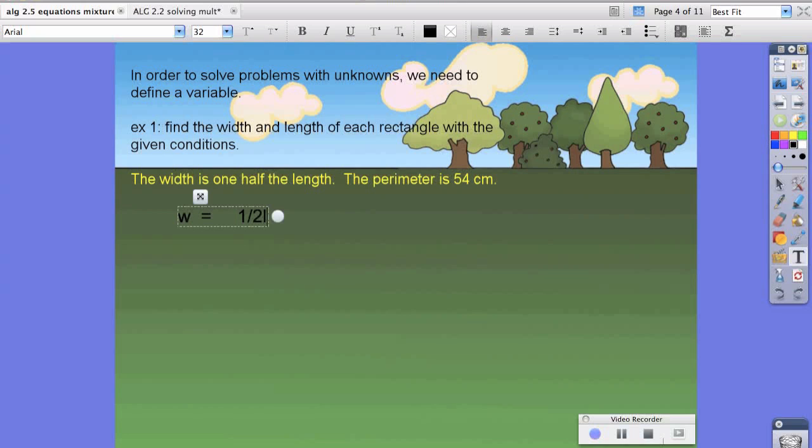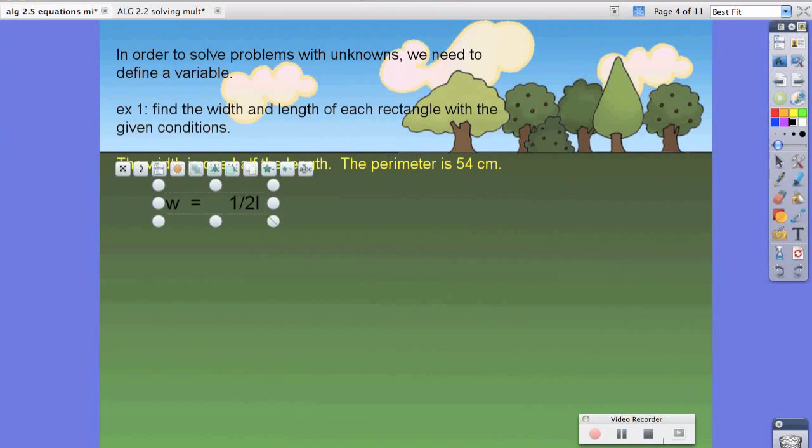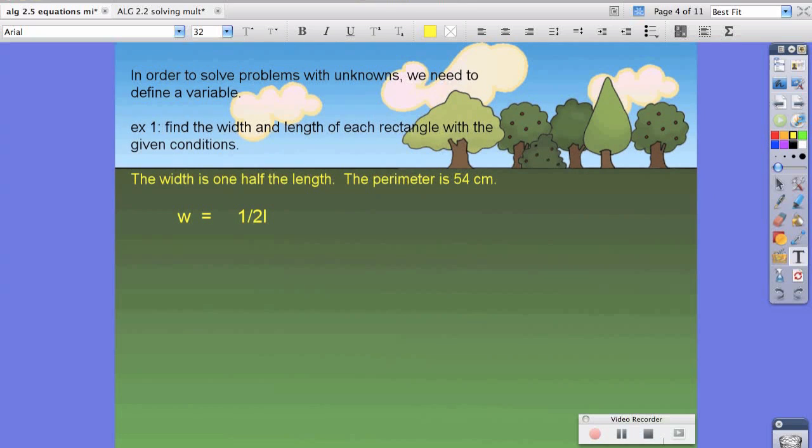The second equation, which you'll see is separated by an equal sign or a period, will give us the rest of the equation. It says the perimeter, so p is, equals 54 centimeters.